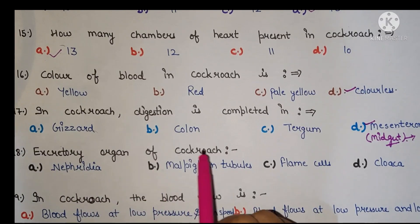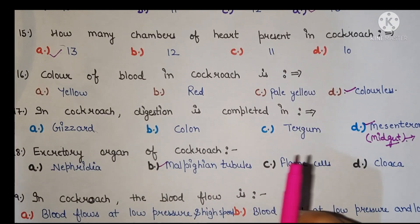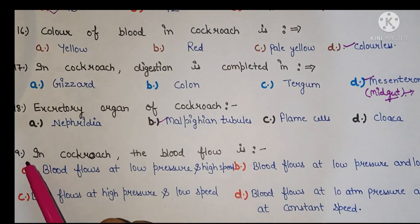Excretory organ of cockroach. The right answer is B, Malpighian tubules.